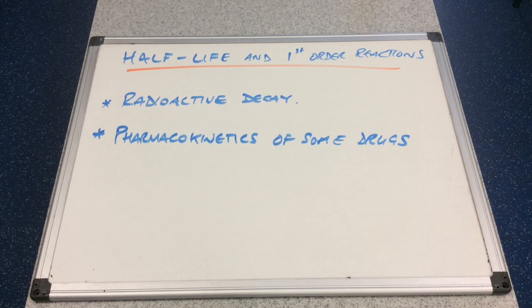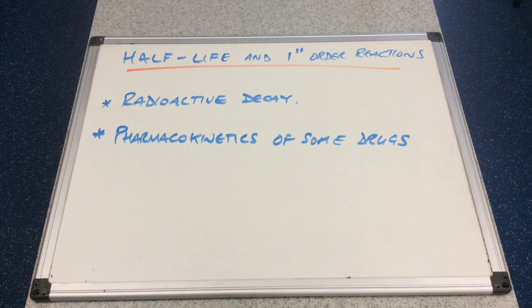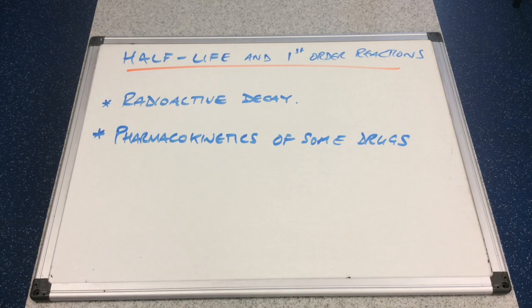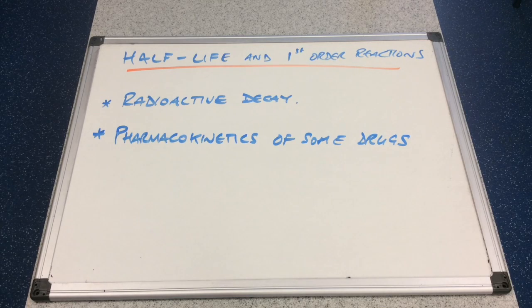There on the board there are a couple of examples of where we see constant half-lives due to this first-order process. We've got radioactive decay, and that's obviously the basis behind something like radiocarbon dating, where they use the fixed half-life for the radioactive decay to age an artefact. Another example is the pharmacokinetics of some drugs — it takes a specific amount of time for the concentration levels to half from their original value, which helps drug companies work out when it's safe to take the next dose.